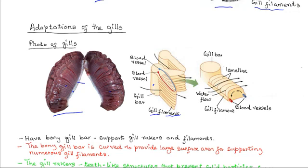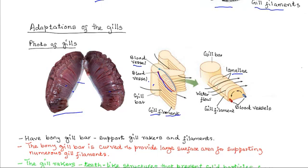Running along the gill bar you can see there are blood vessels — blood vessels coming from the heart. Now, each filament has plate-like projections from the surface known as the lamellae that greatly increase the surface area for gases exchange.